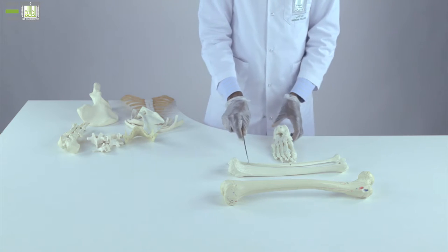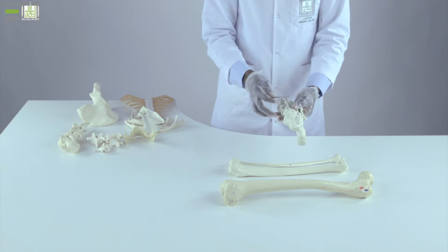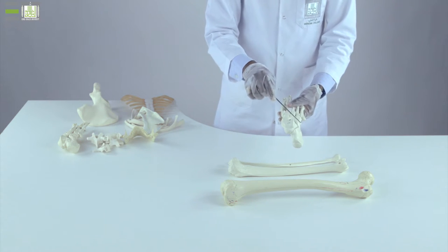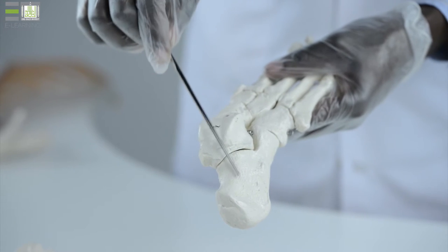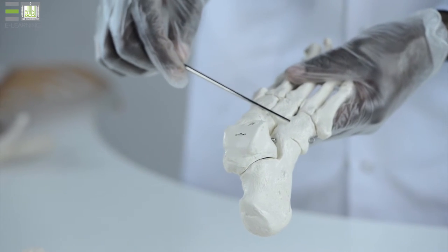The second class is short bones, which is present in two locations: the tarsal bones within our foot and carpal bones within our hand.